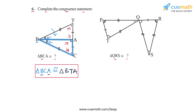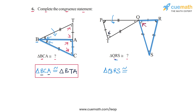Now let's come to the second one. We have to complete: triangle QRS is congruent to what triangle. Let's highlight triangle QRS — this is the triangle, and clearly this triangle is congruent to the other triangle for some order of vertices. We write triangle QRS and match vertices one by one. Corresponding to Q, we have T in the second triangle, so we write T as the first vertex.